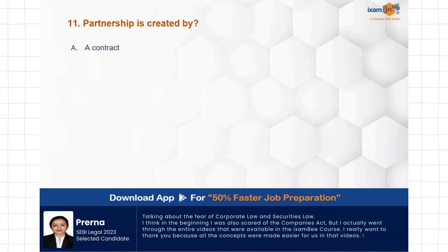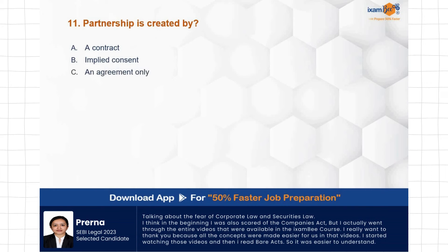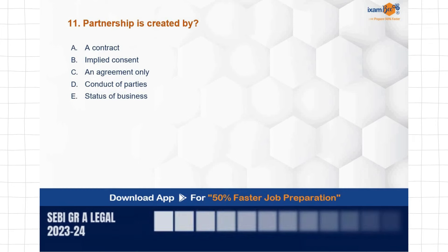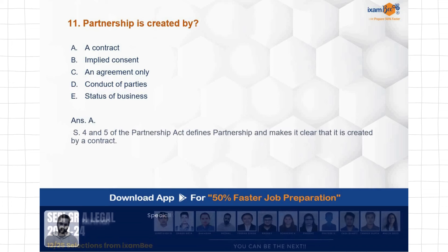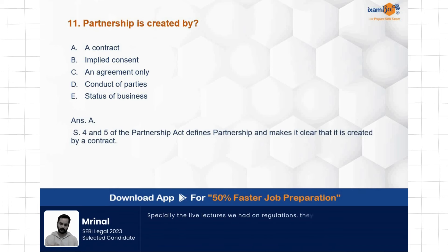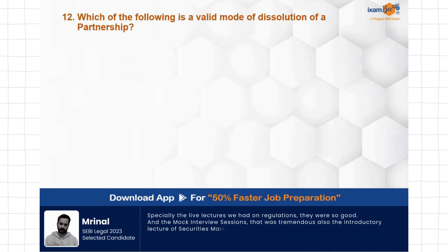Question: Partnership is created by — a contract, implied consent, agreement only, conduct of parties, or status of the business. These are very basic questions, but the options can cause confusion — be prepared thoroughly with your concepts. The correct answer is A — a contract. Sections 4 and 5 of the Partnership Act cover this area. Partnership is created by a contract, that is your partnership deed.